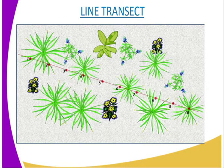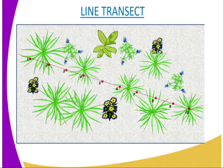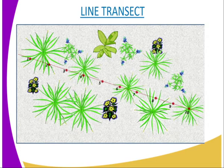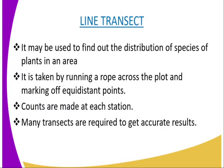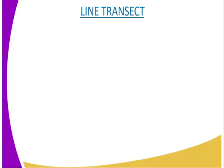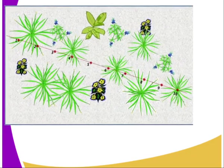Counts are made at each point, or you can call them stations. Only those plants along the line are identified, counted and recorded. Usually, a large number of transects are required to obtain more accurate results. A line transect is particularly useful when studying transition in habitats and populations of an area.